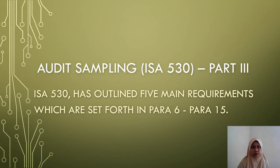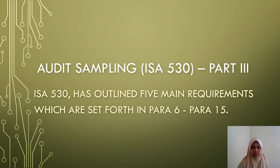We are now in part 3. RSE 530 has outlined five main requirements which are set forth in paragraphs 6 through 15. These paragraphs will also be read together with the application and other explanatory material.